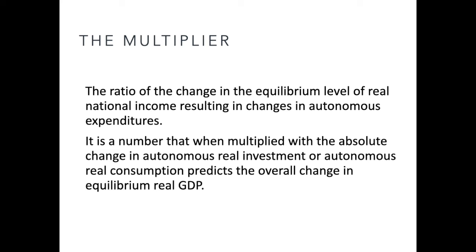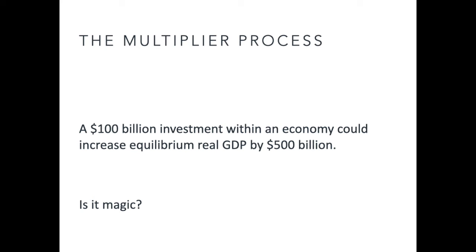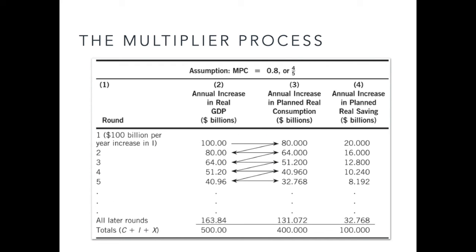The consumption multiplier is the ratio of the change in the equilibrium level of real national income resulting from changes in autonomous expenditures. It is the number that, when multiplied with the absolute change in autonomous real investment or autonomous real consumption, predicts the overall change in equilibrium GDP. We begin with the assumption that a $100 billion stimulus by the government could increase equilibrium GDP by $500 billion, and that the marginal propensity to consume is 80% of disposable income. The $100 billion infused into the economy immediately increases GDP by $100 billion, since what is one person's expenditure is another person's income.